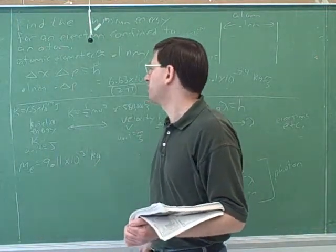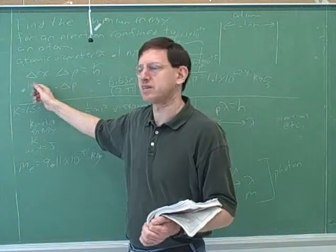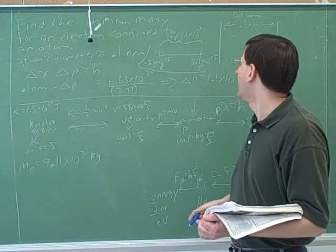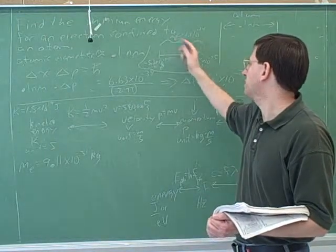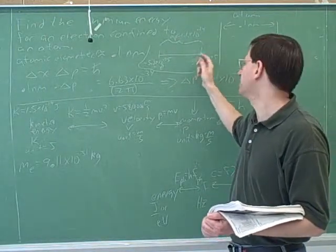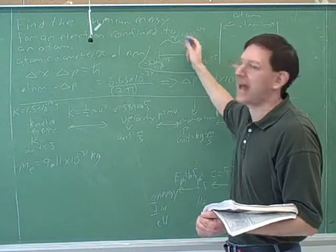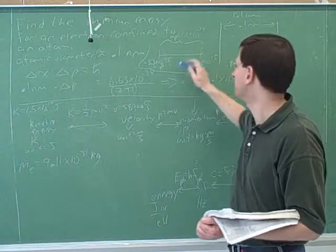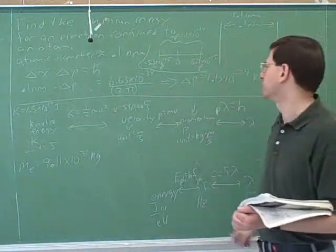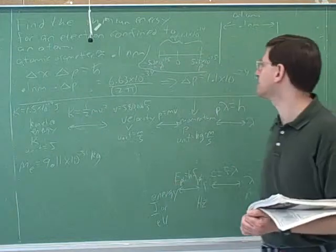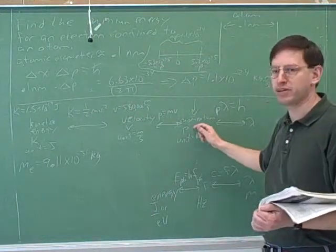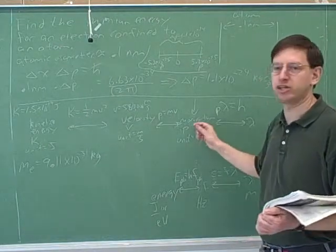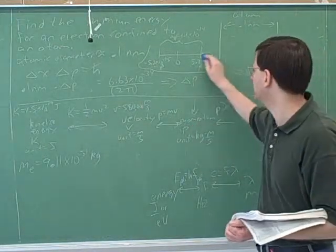And then we figured out delta p. We might as well convert to meters at the start — put everything into standard units. And then we have to make a little picture for the delta p. This is the tricky part: delta p does not tell you the extreme momentum; it tells you the distance between the extreme momenta. So the extreme momentum is one-half of delta p, because we're centered around zero — we don't know if we're going this direction or that direction. And then that's the p that you plug into the kinetic energy formula.